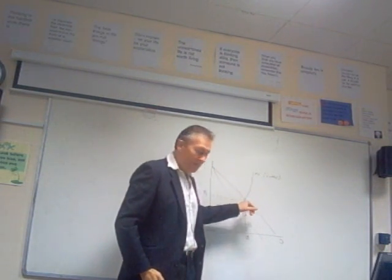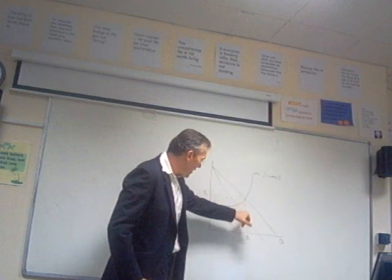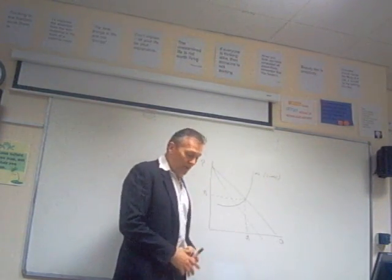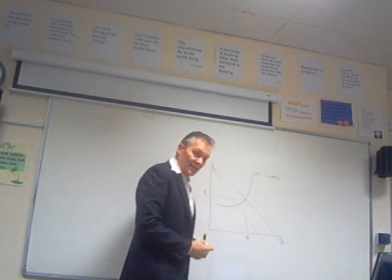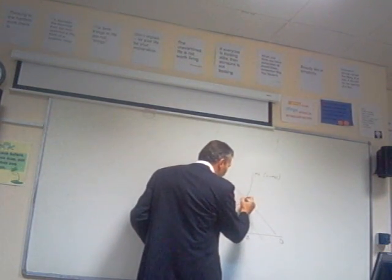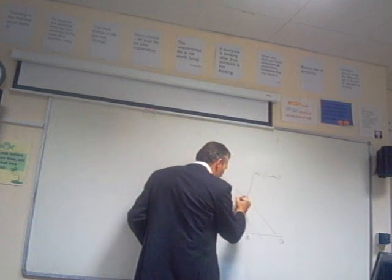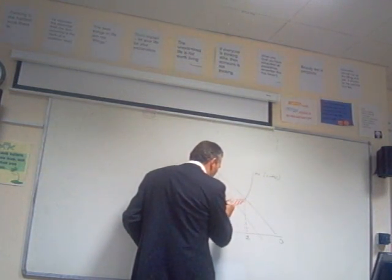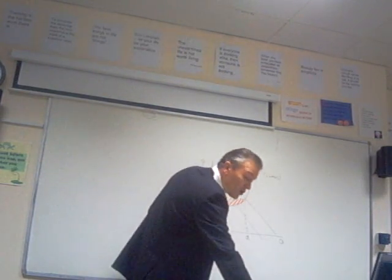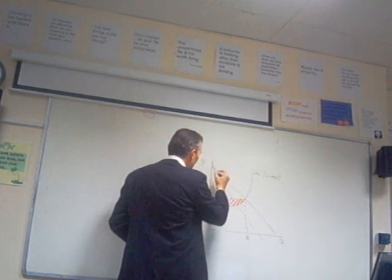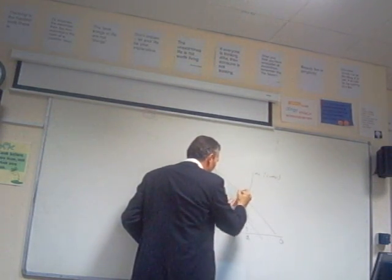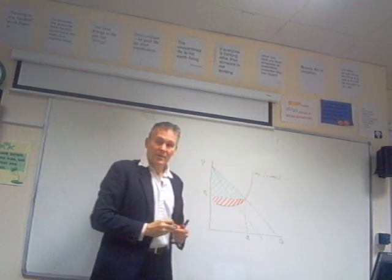In a fully contestable market, we can see where quantity and price are at supply and demand equilibrium. At this stage, the producer surplus is marked in this area, while the consumer surplus is marked in the area above the price equilibrium.